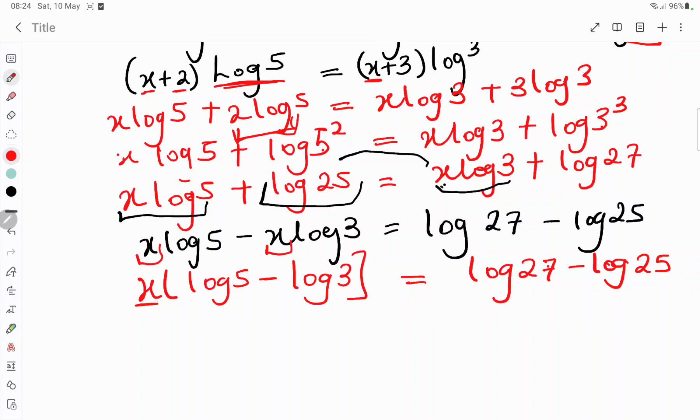And this will now give you that. So we have to divide through by log 5 minus log 3. You divide through by log 5 minus log 3.